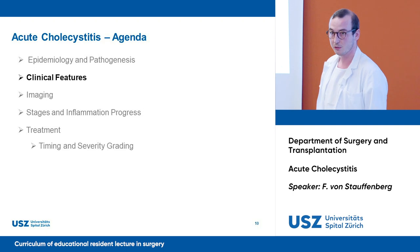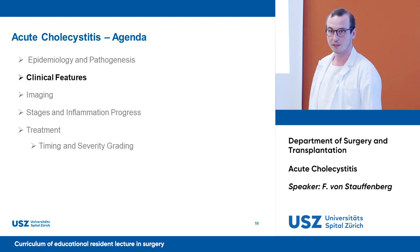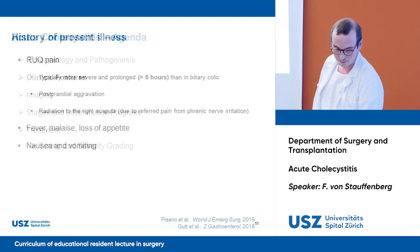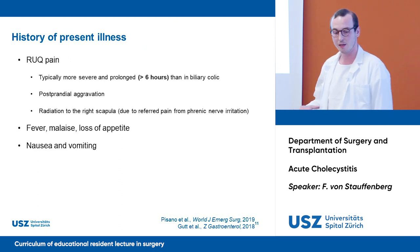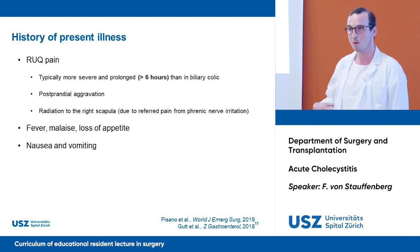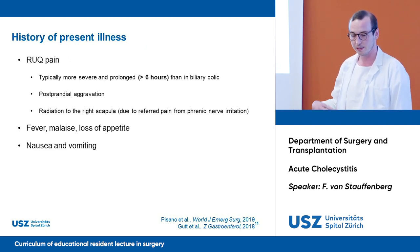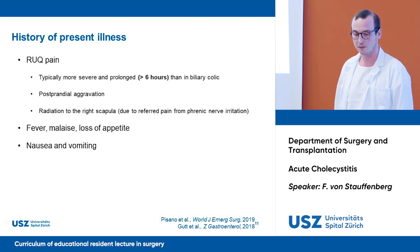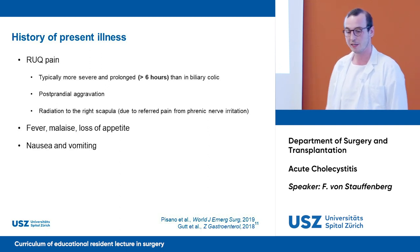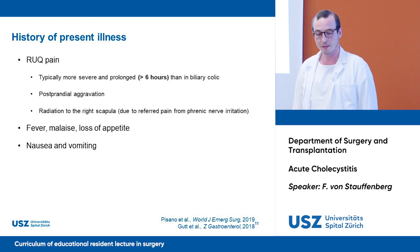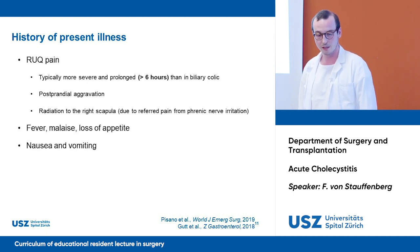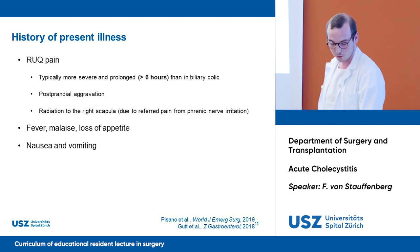How do patients with acute cholecystitis present to us? They will tell you about having right upper quadrant pain, which is typically more severe and prolonged than in biliary colic, lasting over six hours. There's a postprandial aggravation and it might radiate to the right scapula. They may also have fever, malaise, loss of appetite, and present with nausea and vomiting.